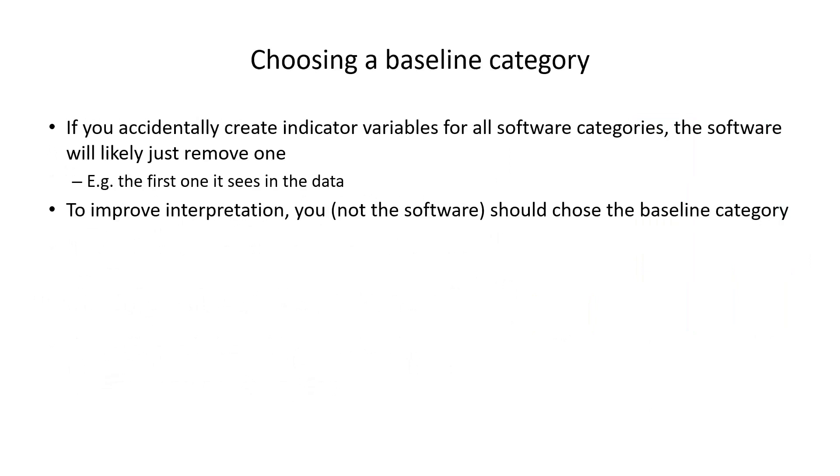One other thing is that if you accidentally create indicator variables for all categories, the software will just remove one. As we've seen earlier, it may just remove the first one it sees in the data.